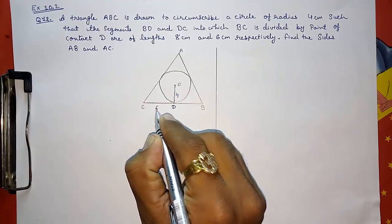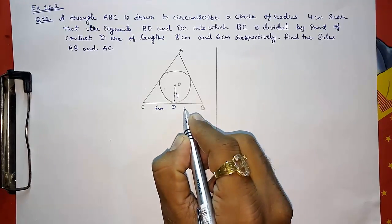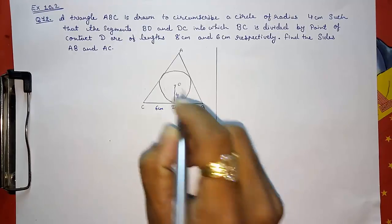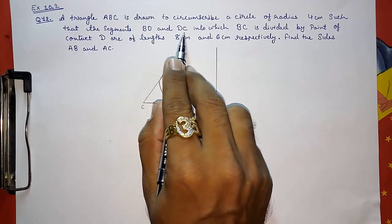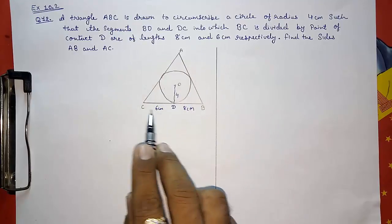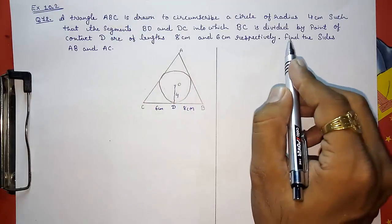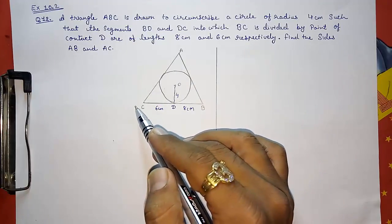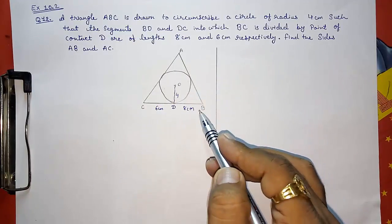So this will be 6 cm and this will be 8 cm. They had told us BD first and then DC. So BD is 8 and DC is 6. Find the sides AB and AC, means we have to find this side AC and this side AB.